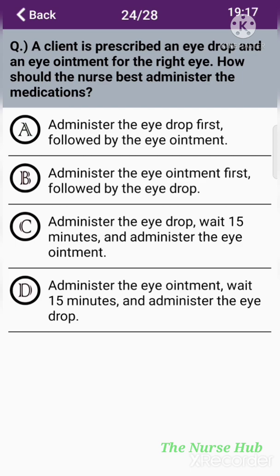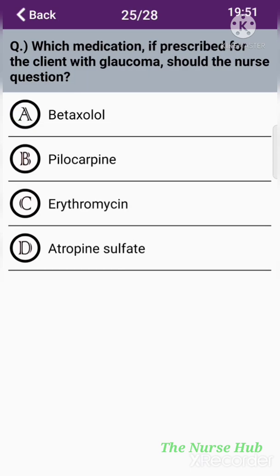The twenty-fourth question: A client is prescribed an eye drop and an eye ointment for the right eye. How should the nurse best administer the medications? Option A: Administer the eye drop first, followed by the eye ointment. Option B: Administer the eye ointment first, followed by the eye drop. Option C: Administer the eye drop, wait 15 minutes, and then administer the eye ointment. Option D: Administer the eye ointment, wait 15 minutes, and then administer the eye drop. The correct answer is option A: Administer the eye drop first, followed by the eye ointment.